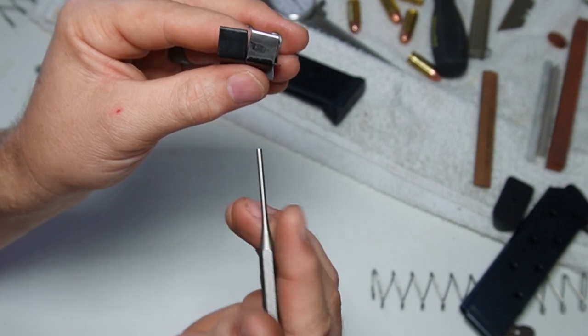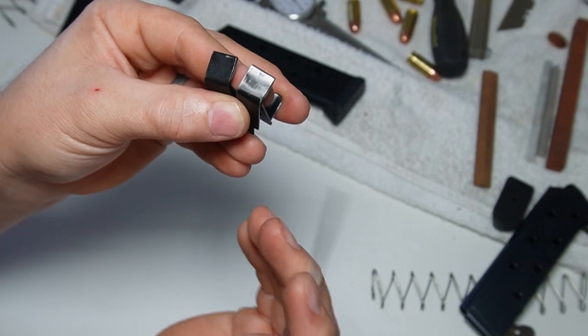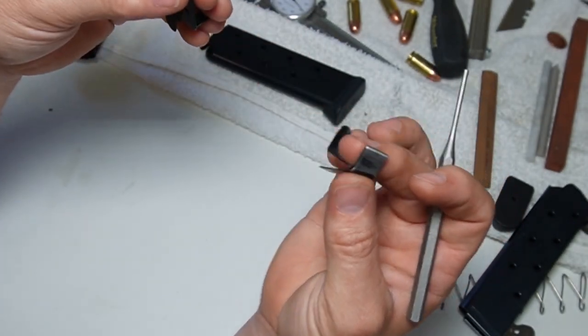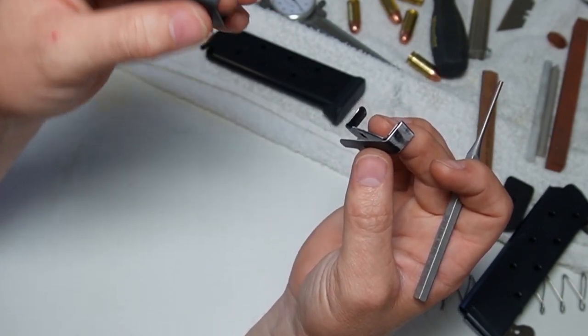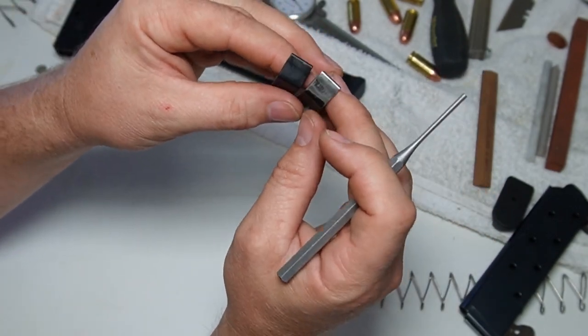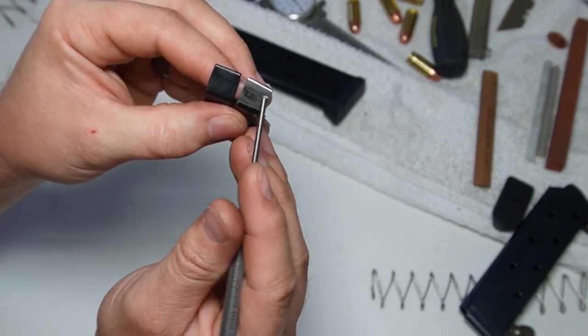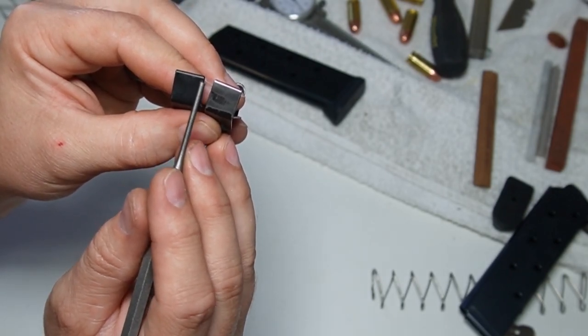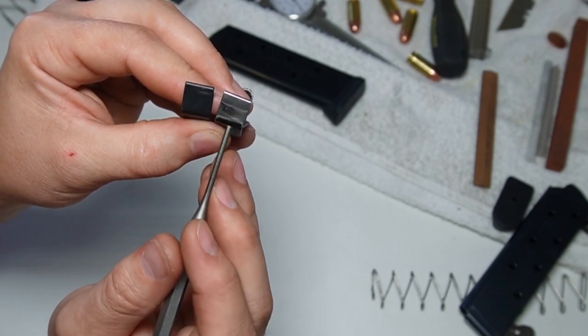Last area was the back of the follower right here. Each one is a little bit different. This follower actually isn't too bad compared to how this one initially felt. I'm still going to do everything to this one and the other magazine, but I wanted to show you a before and after. But this area is going to rub and you can see where it's rubbing, mostly on this side of the magazine follower.